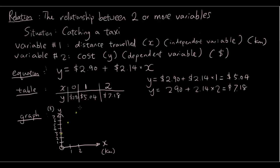So, you can see that the points join up to a straight line. So, if you join up the straight line, this straight line is the equation y equals 2.90 plus 2.14 times x.